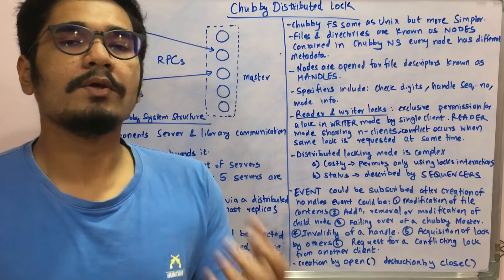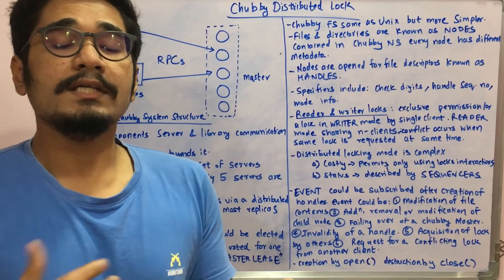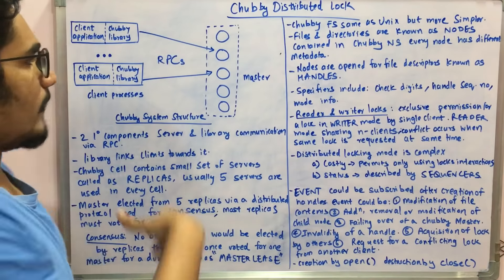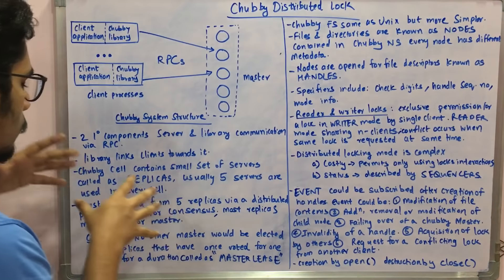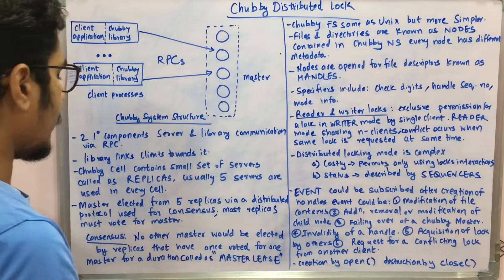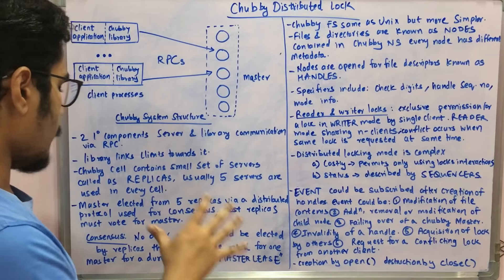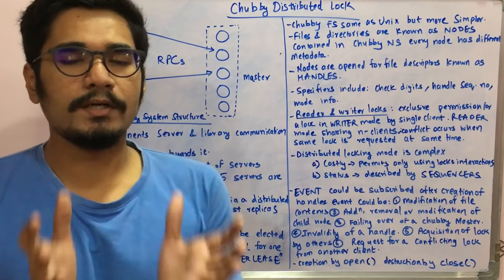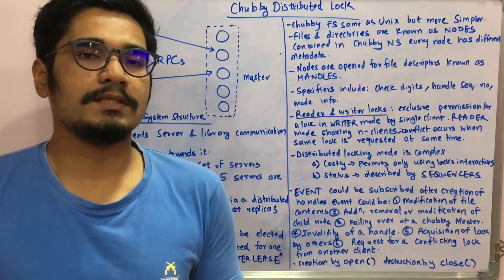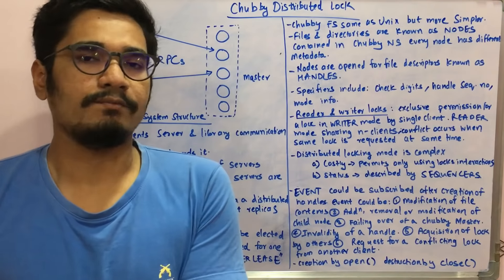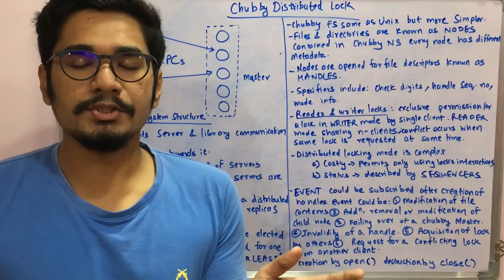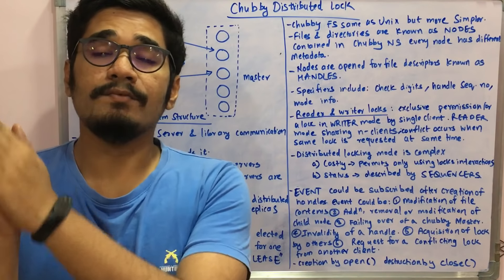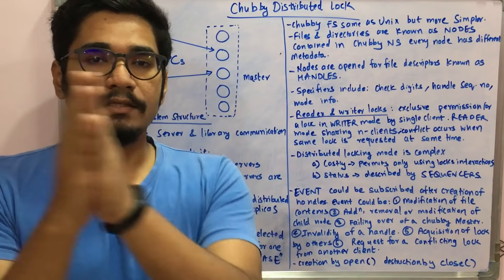The master controls all the operations carried out in the Chubby lock service. Consensus is a general agreement where all the replicas agree, so no other master would be elected by replicas that have once voted for one master for a particular duration. At one particular time, only one master would be elected by all the other replicas — not more than one. The time duration for which a master serves is called the master lease, and for that master lease there will be one master acting for that particular time period.